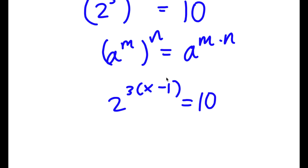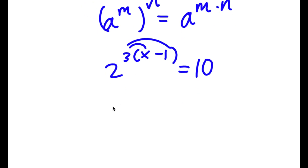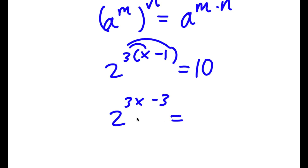And I can simply distribute the 3, so I have 3 times x plus 3 times negative 1. So 3 times x is 3x and 3 times negative 1 is negative 3. So I have 2 to the power of 3x minus 3 is equal to 10.